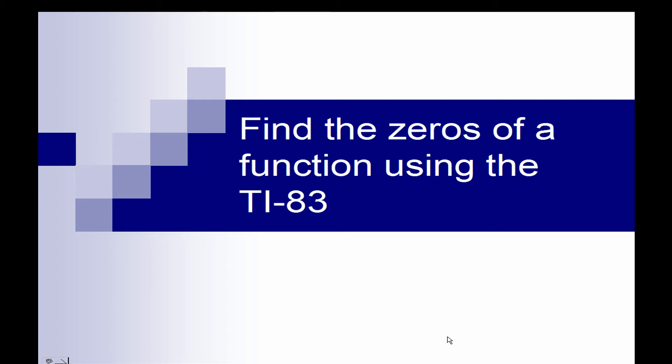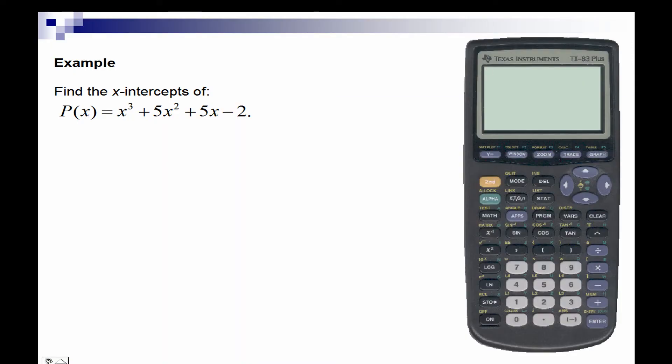Find the zeros of a function using the TI-83. For example, find the x-intercepts of the polynomial x cubed plus 5x squared plus 5x minus 2. First, we'll graph the function to determine how many x-intercepts.